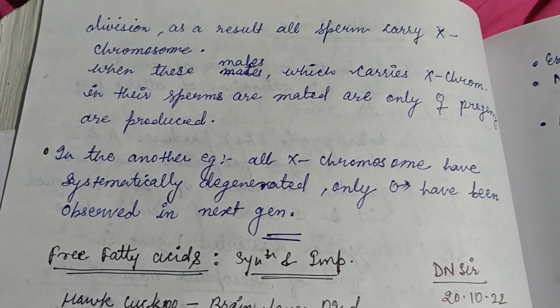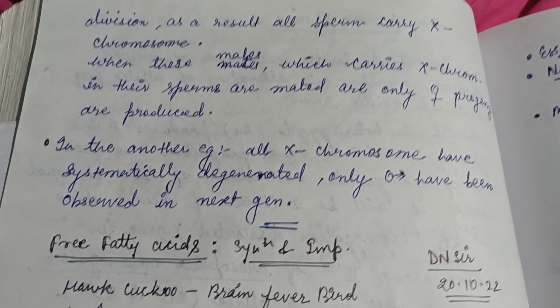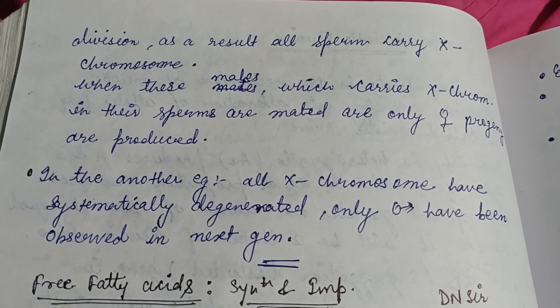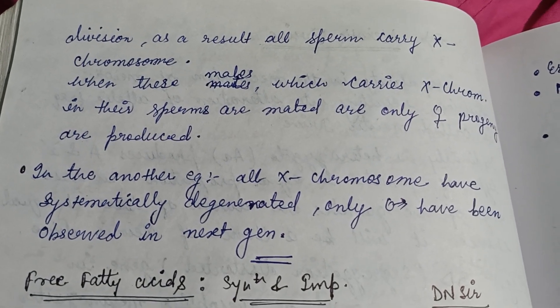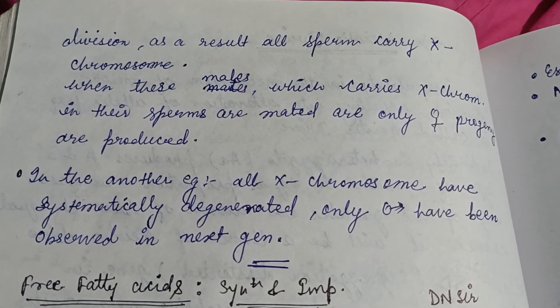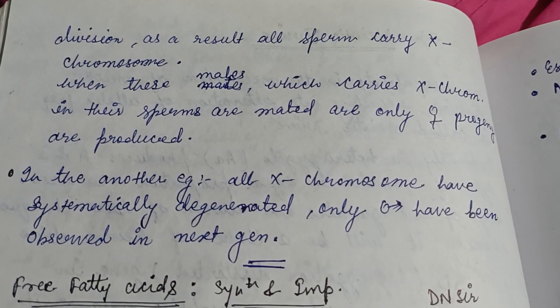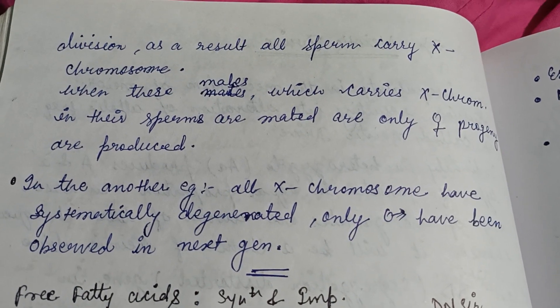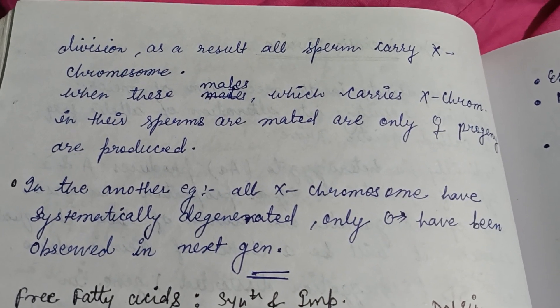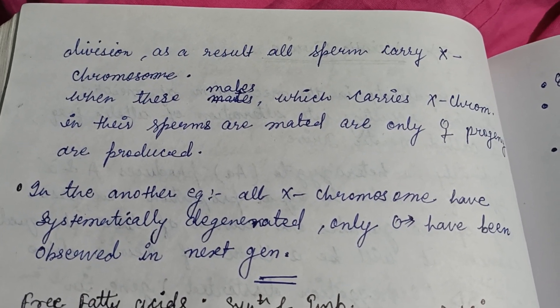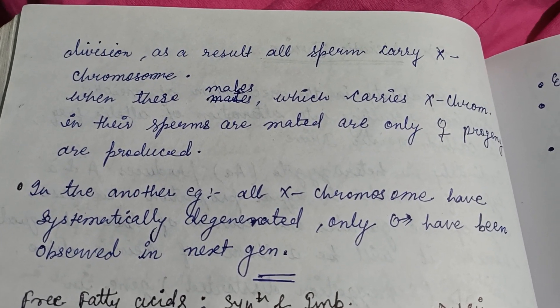When these males, which carry only the X chromosome in their sperm, are mated, only female progeny are produced. In the vice-versa case, if the X degenerates, the Y will eventually lead to male generation. That's all about meiotic drive — thanks for watching.